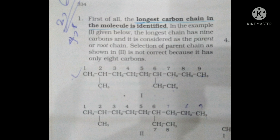For example, given a structure like CH3-CH-CH-CH2-CH2-CH3 with branches, we identify the longest carbon chain. The number of carbons in that longest chain gives the root word.